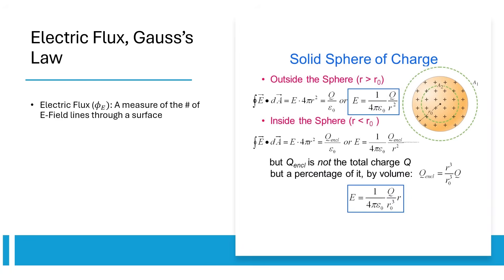Electric flux is a measure of how many E-field lines go through a given surface. We can calculate it by integrating E dot dA, where A is the area of our Gaussian surface. Note that positive flux is defined by lines exiting the surface.